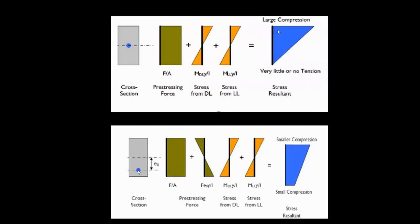In this lecture we will see the analysis of sections using the stress concept. When a pre-stressing force is applied to a cross section, it can be axial or eccentric. If axial, the stress is simply load divided by cross-sectional area: P/A (where P or F is the pre-stressing force). Because of gravity loading (dead load), bending stresses arise based on the support conditions — for a simply supported beam with UDL, the moment is WL²/8.